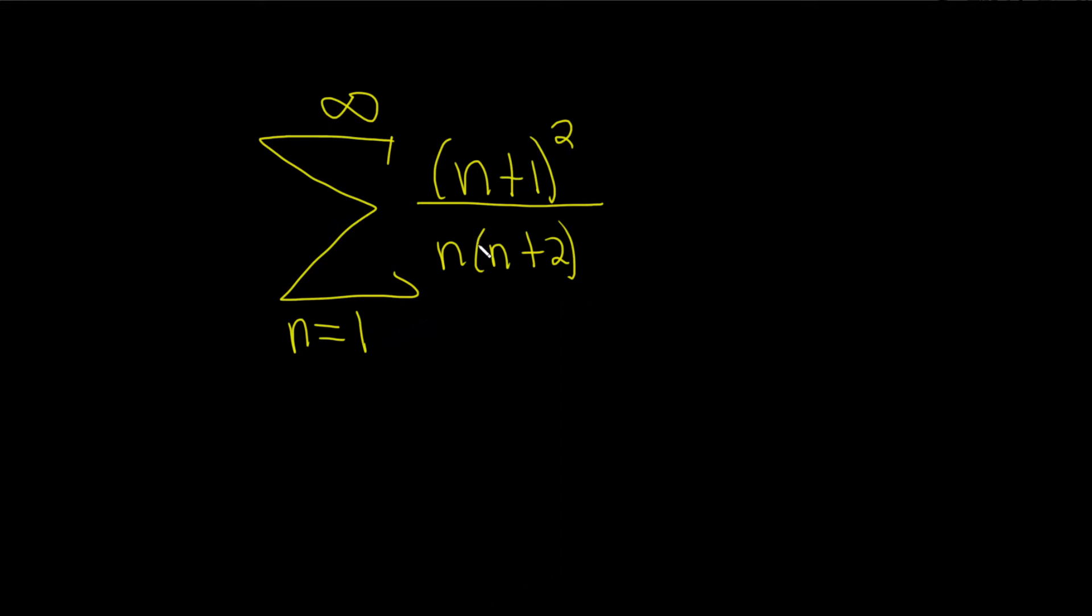So, whenever you have an infinite sum, say the sum of the a's, and if you take the limit as n goes to infinity of a sub n, and you get something that's not equal to 0, then you have divergence.